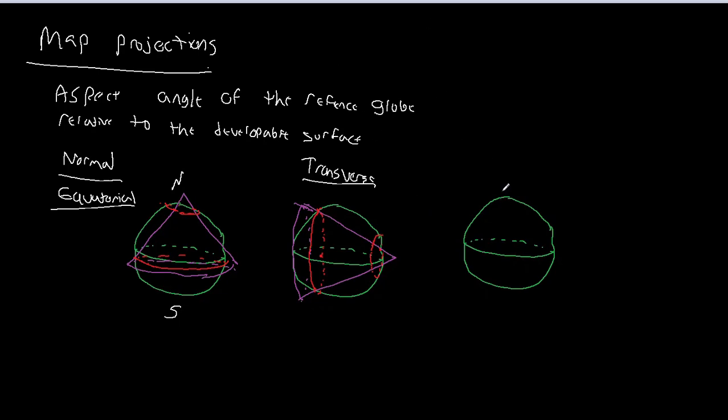And then finally, you could imagine that maybe we pick something in between, where instead of having it run along a meridian or a parallel, it runs something like this. And we have a standard line here, and we have a standard line here. So in this case where it's not along a parallel or a meridian, we call this oblique.